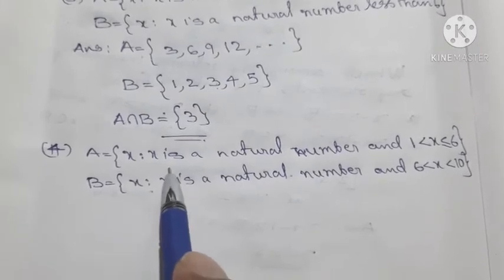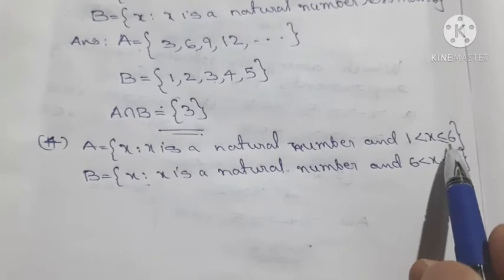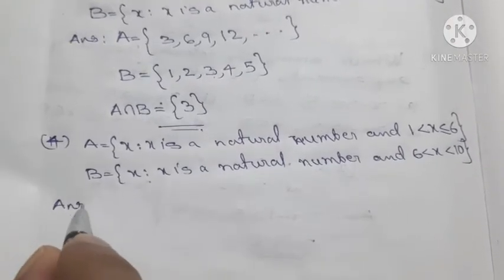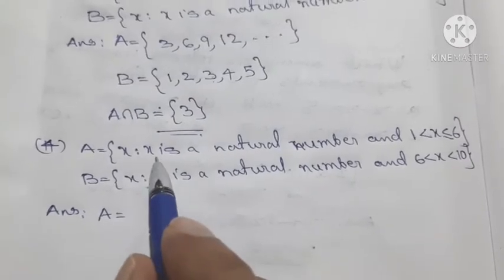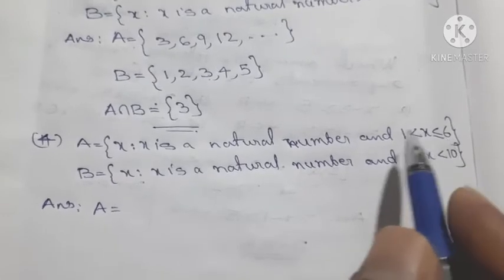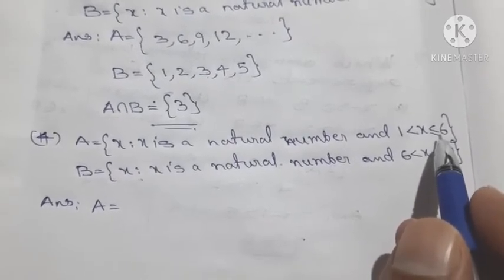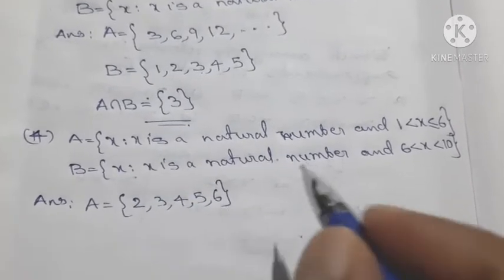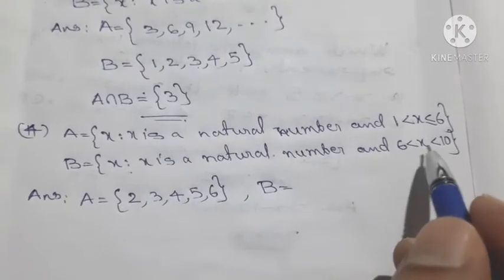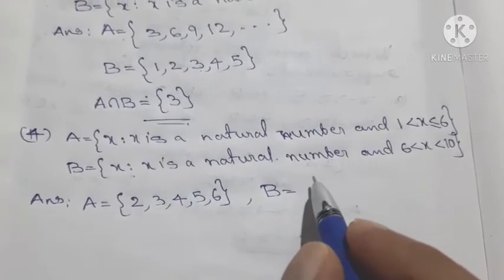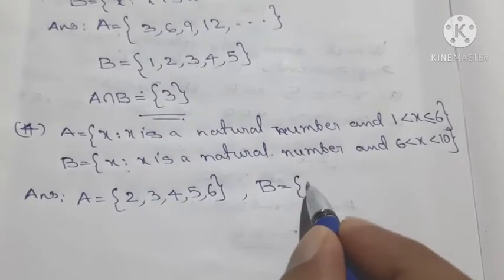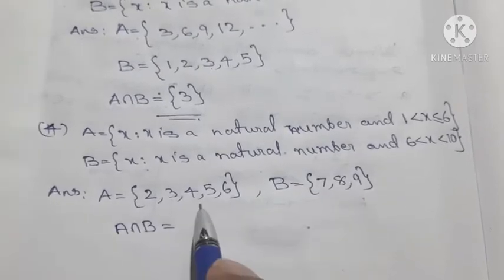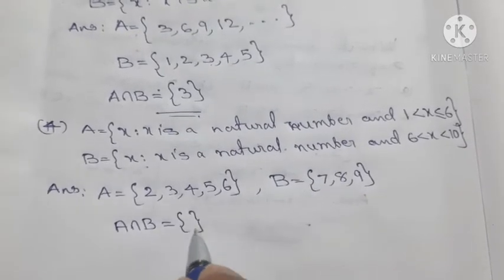A equals the set of x such that x is a natural number and 1 < x ≤ 6, giving {2, 3, 4, 5, 6}. B equals the set of x such that x is a natural number and 6 < x < 10, giving {7, 8, 9}. Then A intersection B equals the empty set, since there are no common elements.